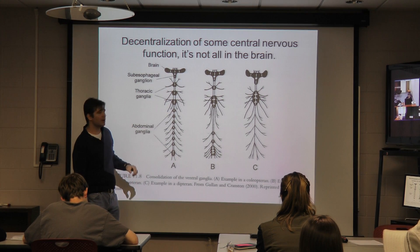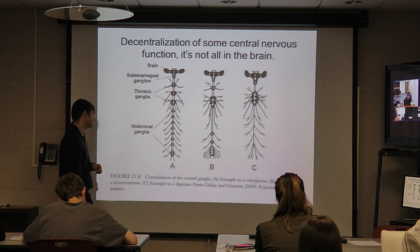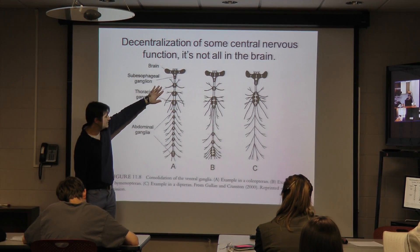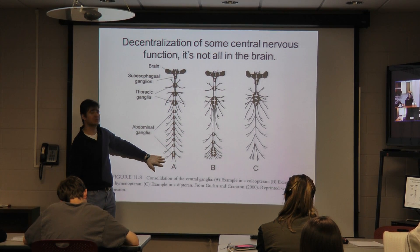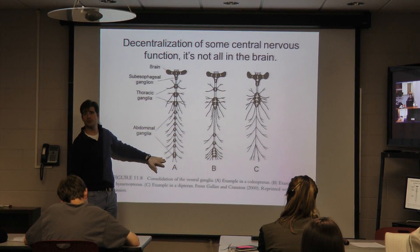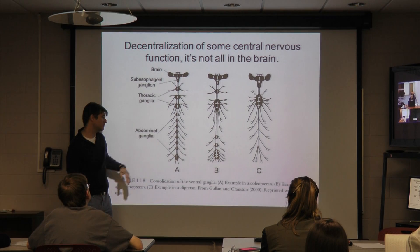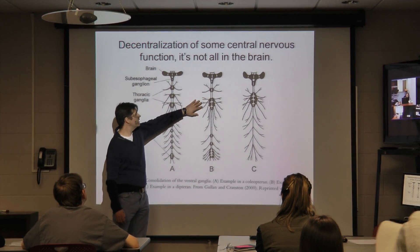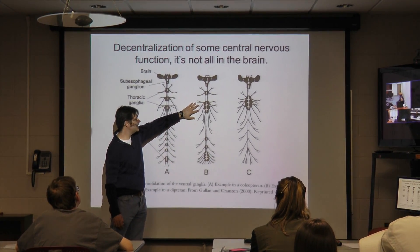But there are clear modifications on this. So if we look in A, this is a general description of the ventral nerve cord and brain region of a beetle. If we look in B, though, you can see this is from a wasp.